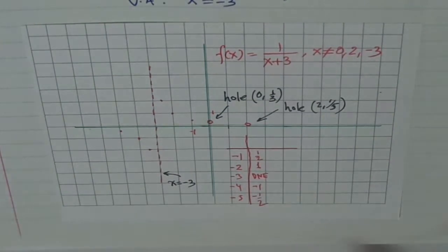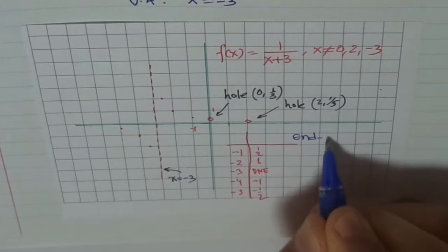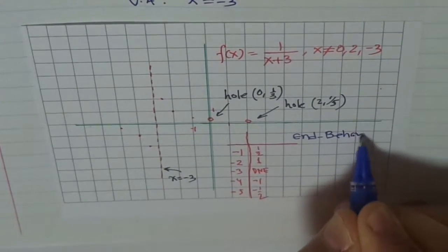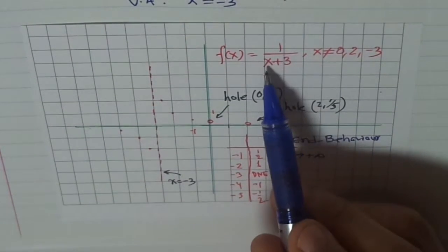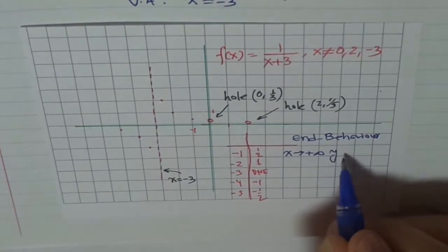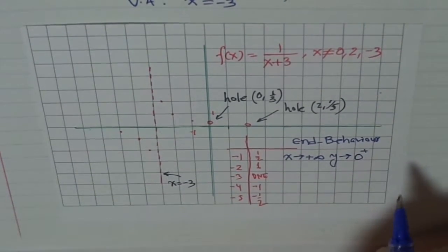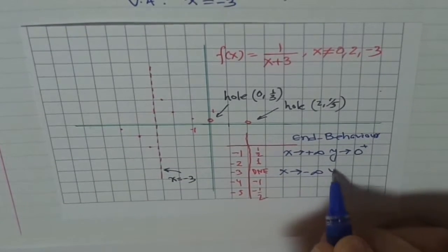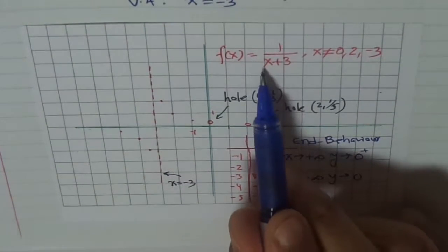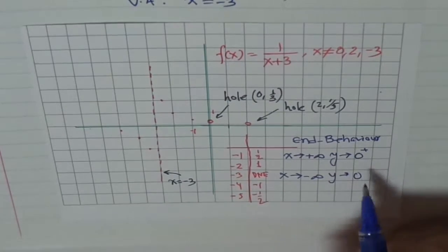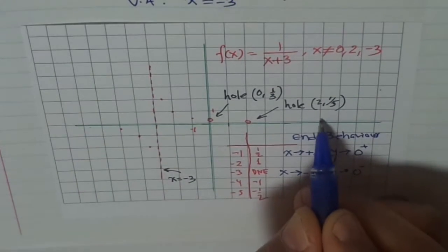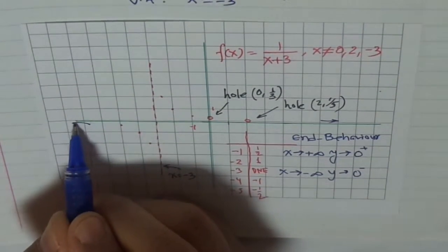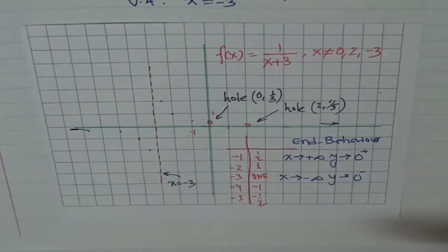Now, what is the end behavior? If x approaches positive infinity, then 1 over a very large positive number will approach 0, and it will be from the positive side. When x approaches negative infinity, y again approaches 0 but from the negative side. That's the end behavior — here the graph approaches 0 from this side, and here it approaches from this side.